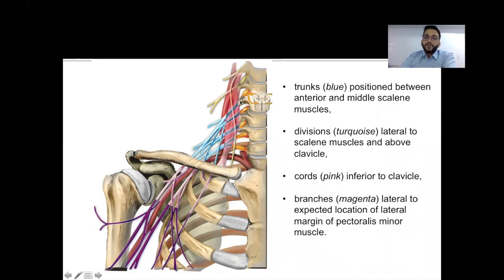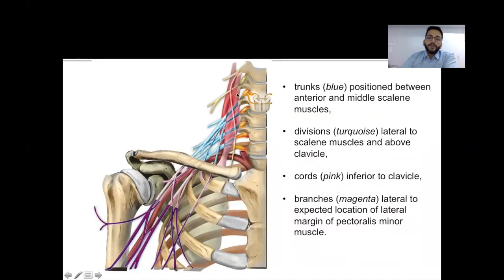The roots join to form the trunks of the brachial plexus. C5 and C6 roots join to form the upper trunk; C7 root continues as the middle trunk; and C8 and D1 roots join to form the lower trunk. The trunks traverse between the anterior and posterior scalene muscles. From the lateral margin of the scalene muscles to the upper margin of the clavicle, we have the divisions.